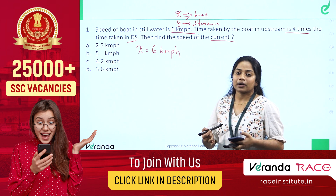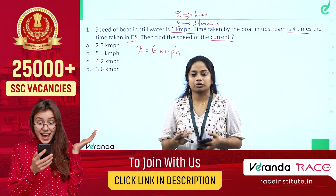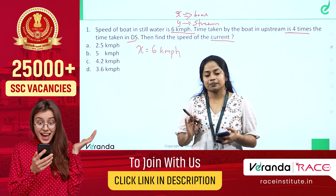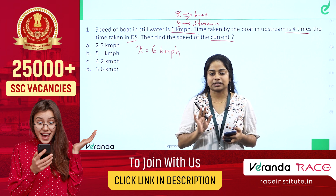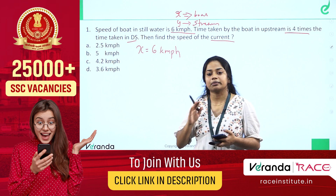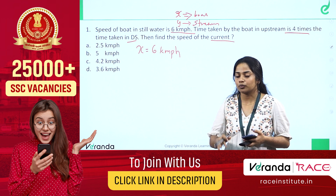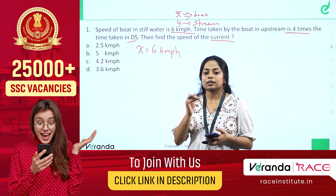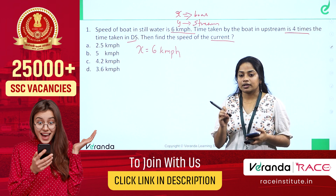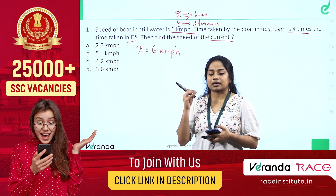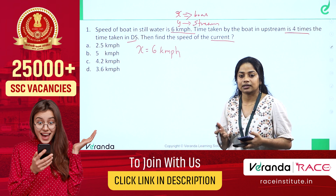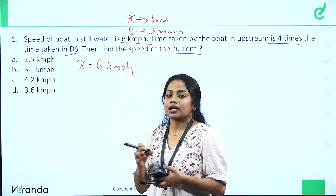When we find the speed of the current, the flow resists the boat moving upstream and assists it downstream. The upstream time is 4 times the downstream time. Time equals distance divided by speed.